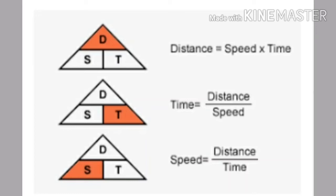The formula for speed is: speed is equal to distance traveled divided by time taken. Speed is usually denoted by the symbol v (small v). If a body travels a distance d in time t, then its speed is given as v = d / t.